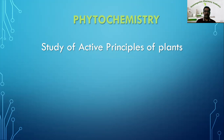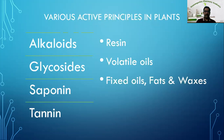Let us see what phytochemicals or phytoconstituents are present in a plant: alkaloids, glycosides, saponins, tannins, resins, volatile oils, fixed oils, fats, and waxes. These are the important pharmacologically active plant constituents. Let us see them one by one.